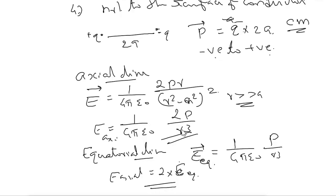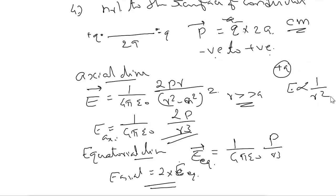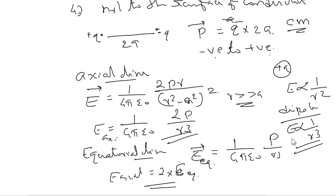Note the difference: for a single point charge, E is proportional to 1/r², whereas for a dipole, E is proportional to 1/r³. This is an important distinction between the electric field of a single charge and that of a dipole.